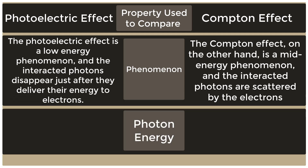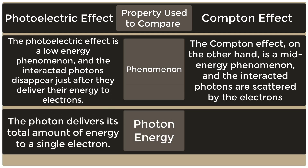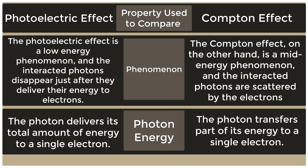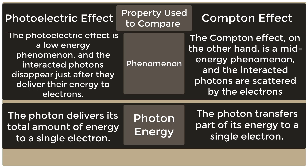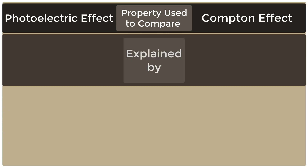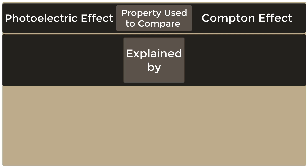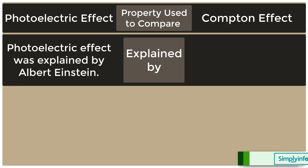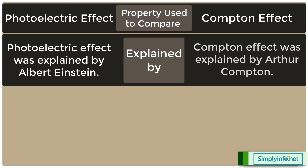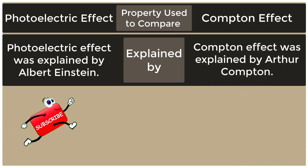Regarding photon energy: in the photoelectric effect, the photon delivers its total amount of energy to a single electron, whereas in the Compton effect, the photon transfers only part of its energy to a single electron. The photoelectric effect was explained by Albert Einstein, whereas the Compton effect was explained by Arthur Compton.